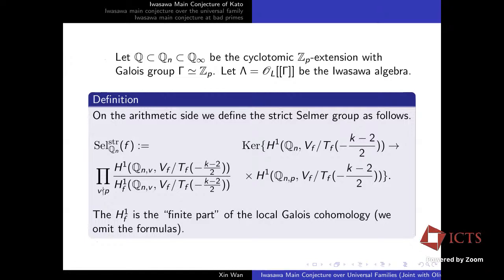Now we define the main arithmetic object we want to study, namely the so-called strict Selmer group following Kato. On the arithmetic side, we define the strict Selmer group as follows. We first form this global cohomology — let Q_n be an intermediate field extension between Q and Q_∞, and consider the first degree global Galois cohomology with coefficient V_F/T_F tensored with the twist by (K−2)/2. This V_F/T_F is the p-divisible coefficient of the Galois representation. We tensor back by (K−2)/2 to make it correspond to the central L-value.